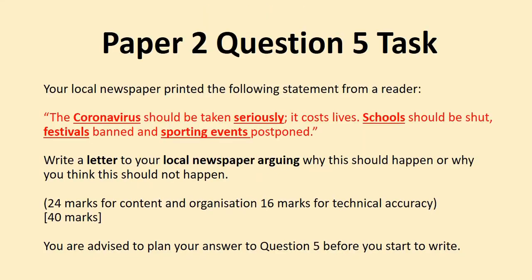So — Paper 2, Question 5. Your local newspaper printed the following statement from a reader: 'The coronavirus should be taken seriously. It costs lives. Schools should be shut, festivals banned, and sporting events postponed.' Your task is to write a letter to your local newspaper arguing whether this should happen or why you think it should not happen. You're arguing for or against the statement in terms of your opinion and reasons. You're writing to the editor — the person in charge of the paper it was published in.